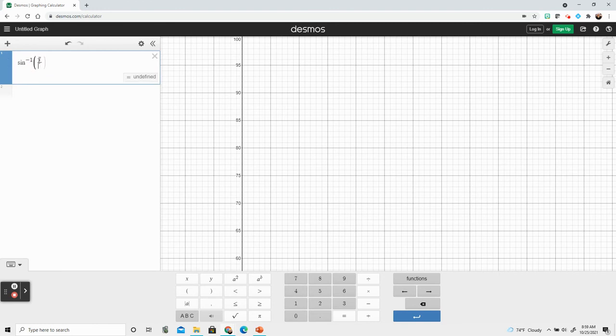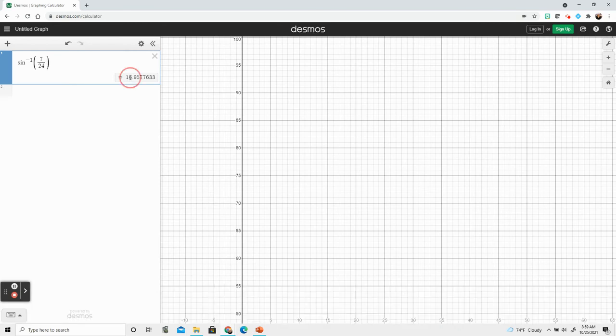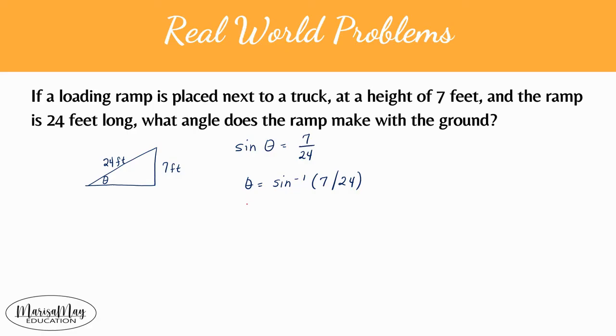Now you can type in 7 divided by 24 and Desmos will tell you that the angle is we'll round to the nearest degree 17 degrees. So the angle here is 17 degrees.